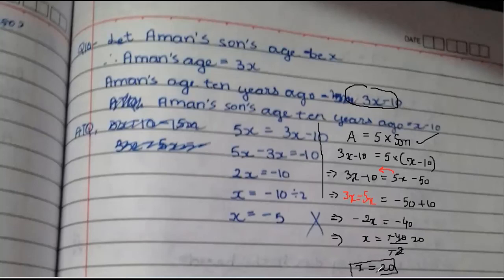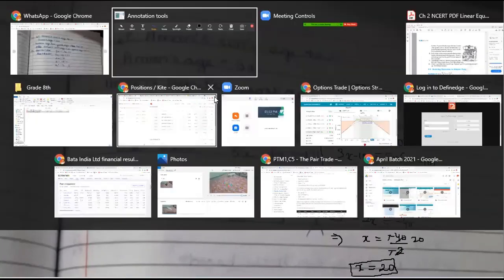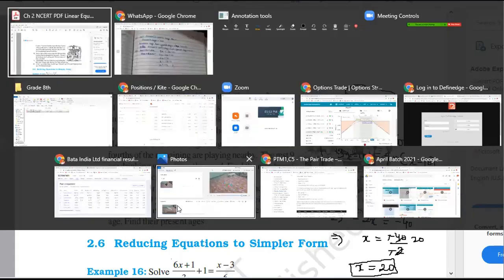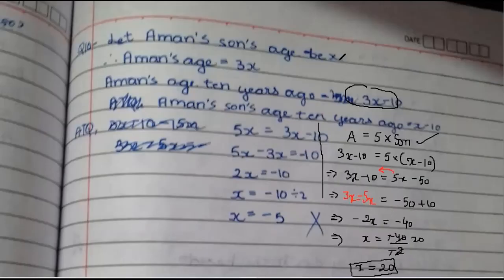But make sure you write the final statement. What was the question? Let us go back and look at the question. Find their present ages. Present ages means today's age. So that means their present ages were x and 3x. Therefore, Aman's son's present age is 20 years. Aman's present age is 60 years - show the working: 3 times 20 is 60 years. Make sure you write the unit.